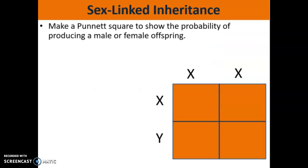Hopefully you guys remember how to make Punnett squares — something we learned about earlier in the school year. Here we see a Punnett square set up. The question we want to answer is: what is the probability of producing either a male offspring or a female offspring?